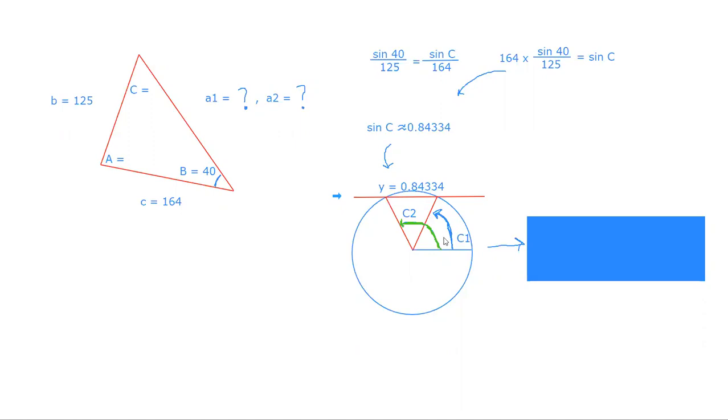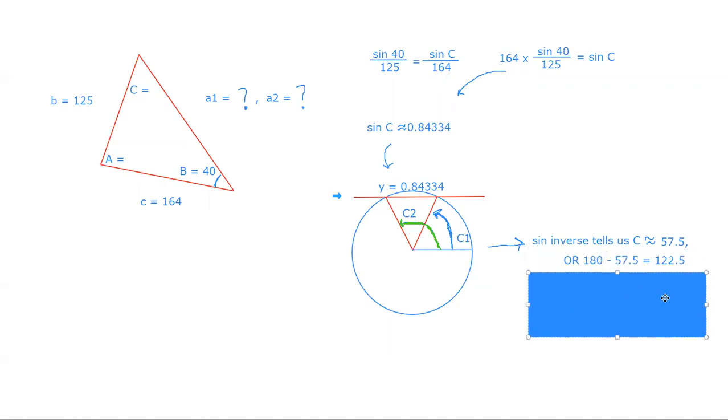So from here, we know that we're going to get two angles. Your calculator will tell you one of these if you just plug in the sine inverse of 0.84334 and I believe it'll give you 57.5 degrees. But we also know that this other angle exists and to find that one, we know that it has the same reference angle as 57.5 degrees because it has the same sign. So we just take 180 minus 57.5 to give us 122.5. So there's two options here.